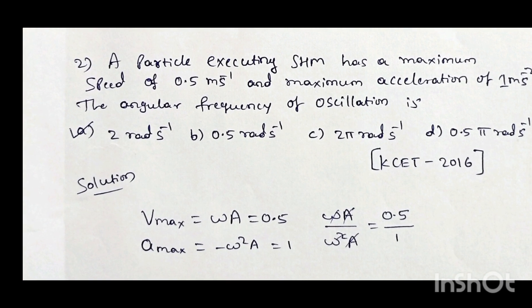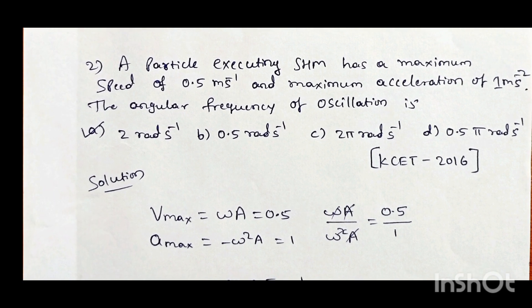Second question: a particle executing SHM has a maximum speed of 0.5 m/s and maximum acceleration of 1 m/s². The angular frequency of oscillation is: option A 2 rad/s, option B 0.5 rad/s, option C 2π rad/s, option D 0.5π rad/s. This question appeared in KCET 2016.